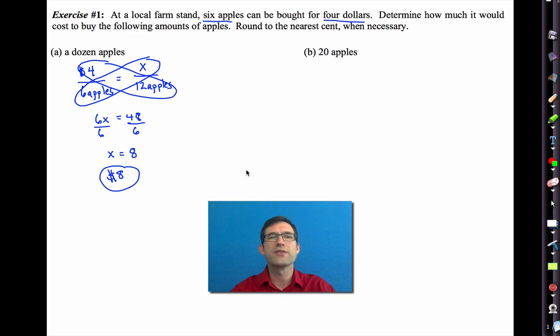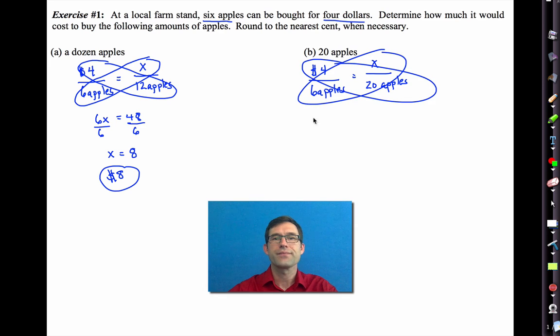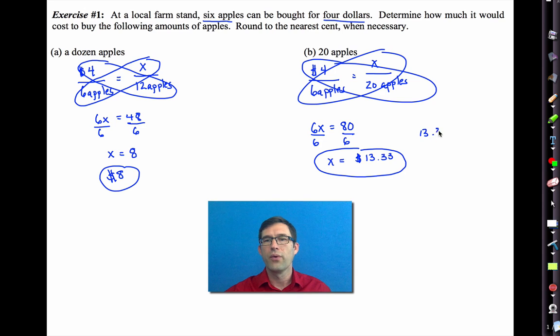It gets a little bit trickier when we have something like 20 apples. There, setting up that proportion is going to help a lot. Because now if we say $4 is to six apples, x dollars is to 20 apples. I can now cross-multiply, giving me 6 times x is 4 times 20, or 80. I can now divide both sides by 6, and I'll find out that x is $13.33. That's not a reasonable way to leave our answer because we're talking about money here. The cashier would round to the nearest cent. So we have $13.33.